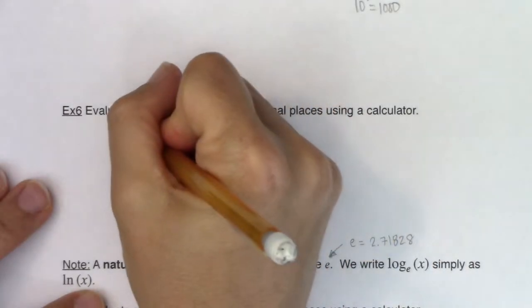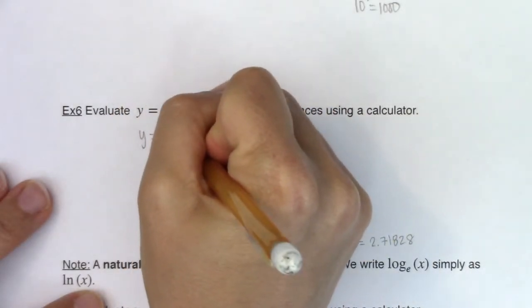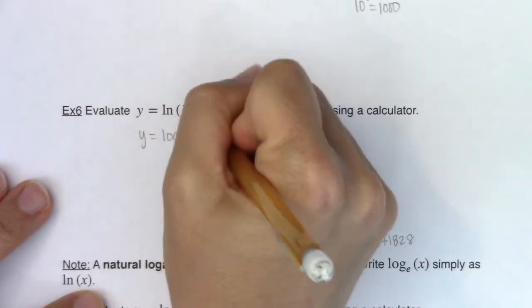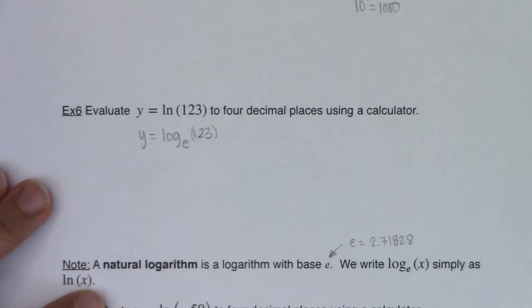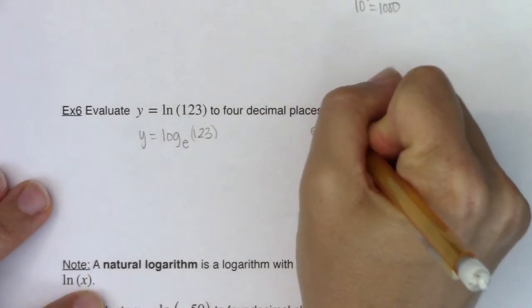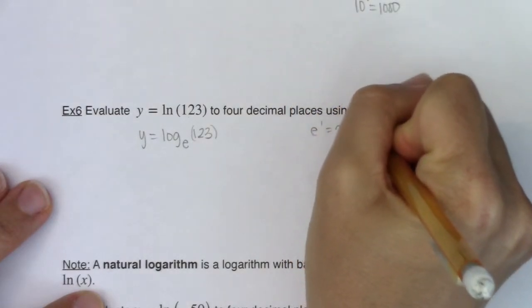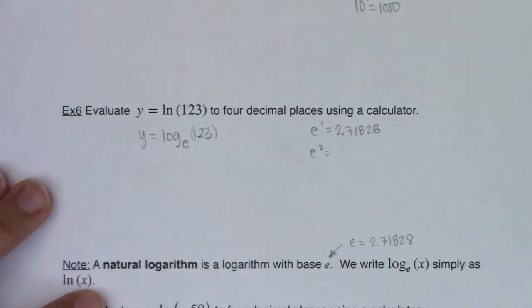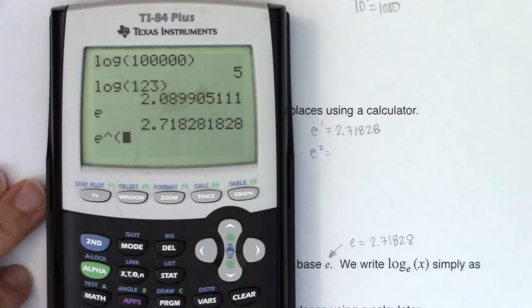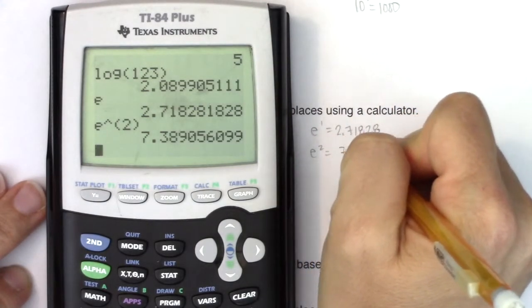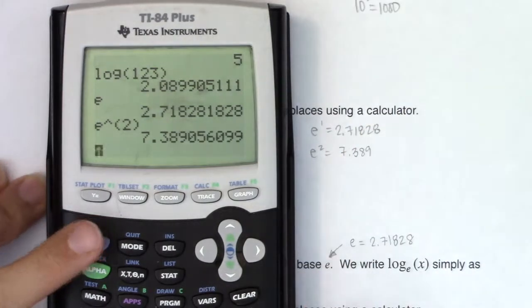So I would like in this case to do log base E of 123. So I'm not quite sure what number this is going to be. We could figure out E to the one. We know it's about 2.71828. Let's figure out what E squared is, just to get some gut feelings on this before we get going. If I did E squared, that looks like it's about 7.389. Let's do E cubed.